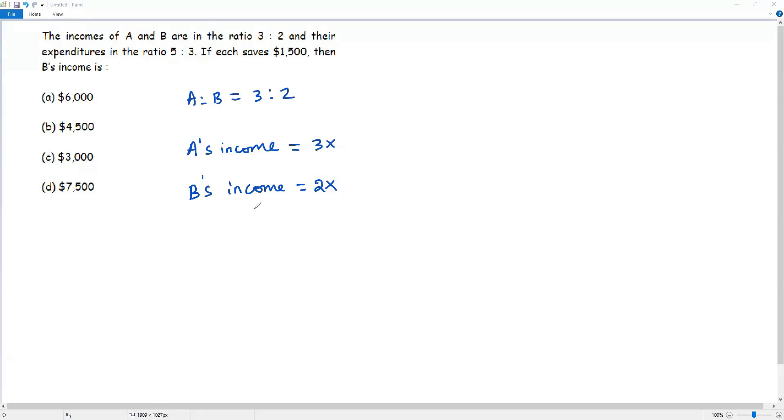We know A's income and B's income in terms of x, that is 3x and 2x. If each saves $1500, that is A is saving $1500 and B is saving $1500. From A's income 3x, I subtract the savings $1500. What does this represent? This 3x represents the income of A and this is the savings of A.